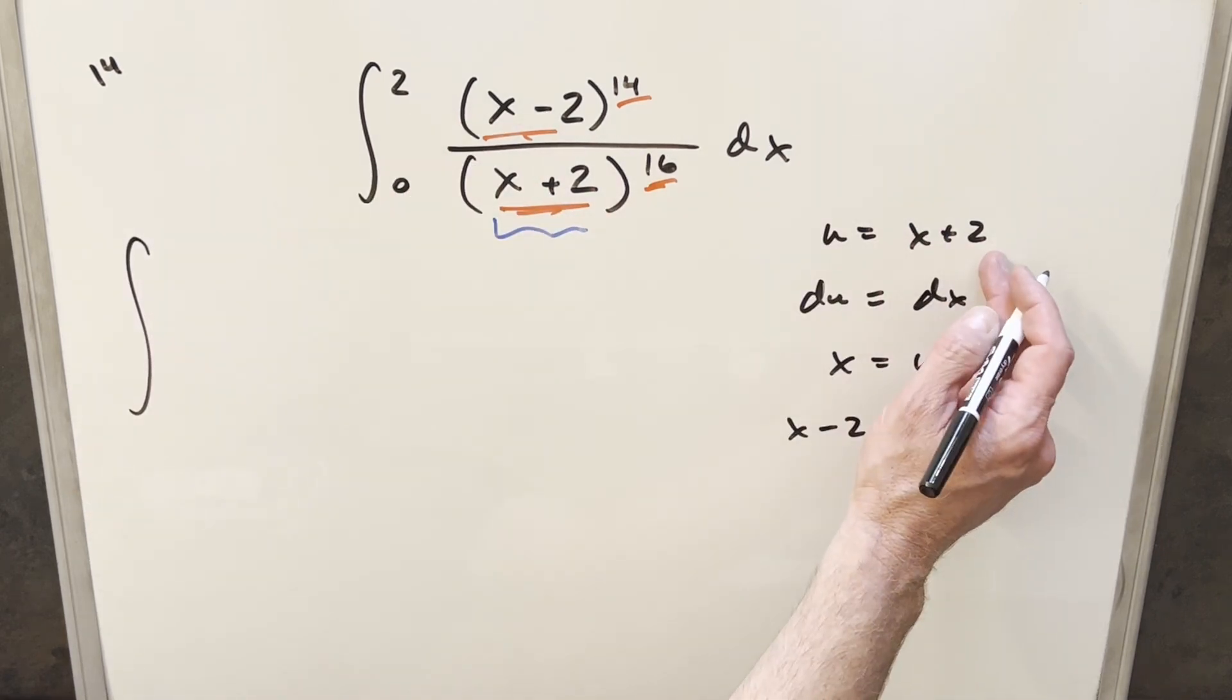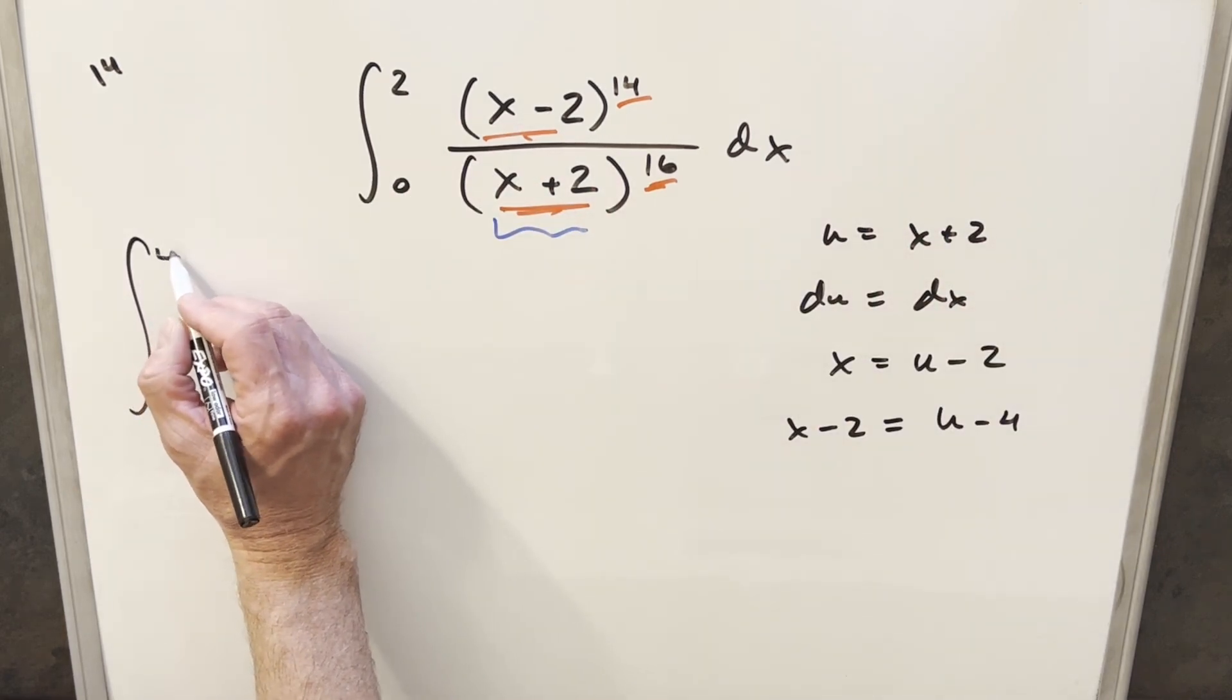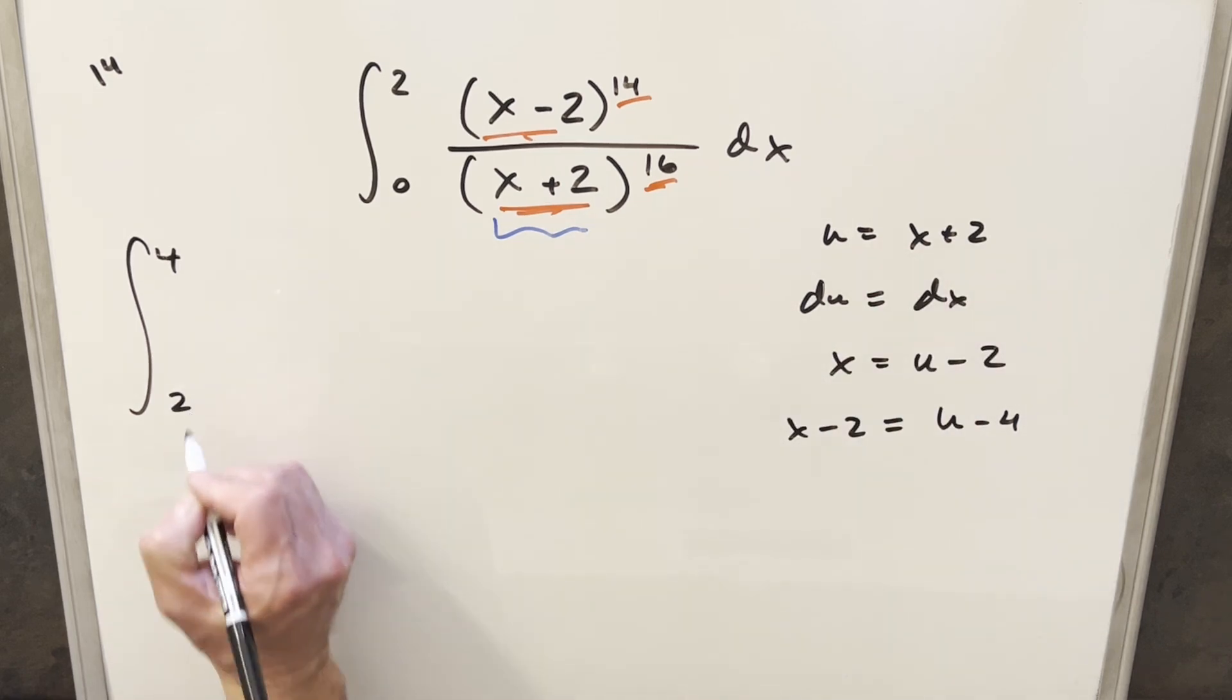And then we'll just go ahead with this, take our upper bound 2, plug it in here. This bound becomes 4. Plugging the 0 in here, the lower bound becomes 2.